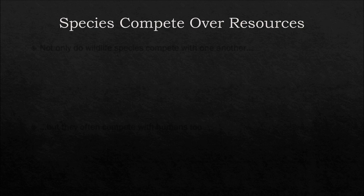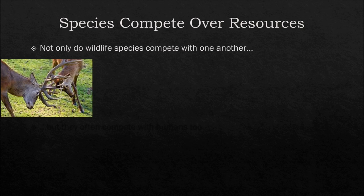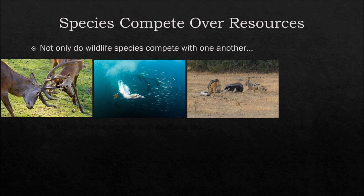When trying to understand human wildlife conflicts in agriculture, it's important to know that species compete over resources — things like land, food, and water that are necessary for survival. Not only do wildlife species compete with one another — this could be intraspecific, or within the same species, like two male deer fighting over a female or a territory — but it can also be interspecific, which is between two or more different species, competing over things like the same food source or the same land area.